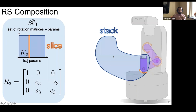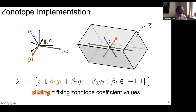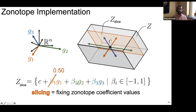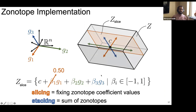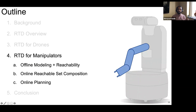What are we actually doing to the zonotopes to make this possible? Slicing is actually really easy to implement — it means just fixing coefficient values. Those beta coefficients vary between minus one and one; slicing fixes any subset of betas to particular values, shifting the center and reducing the number of generators. Stacking is just the Minkowski sum of zonotopes — the addition of centers and concatenation of generators. Both operations are quick to implement at runtime and entirely parallelizable. The takeaway: we now have a reachable set combining offline and online reachability analysis for our arm, usable for online trajectory optimization just like with the drone.